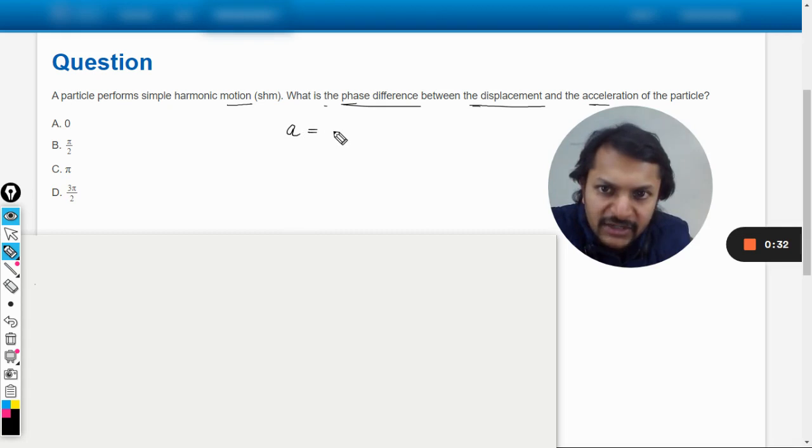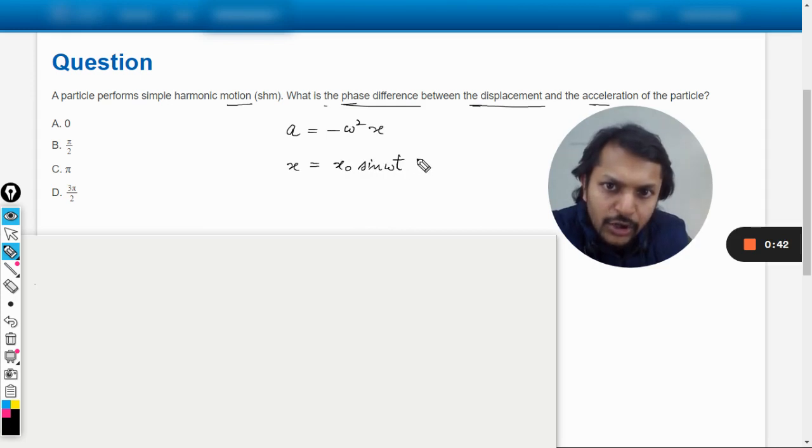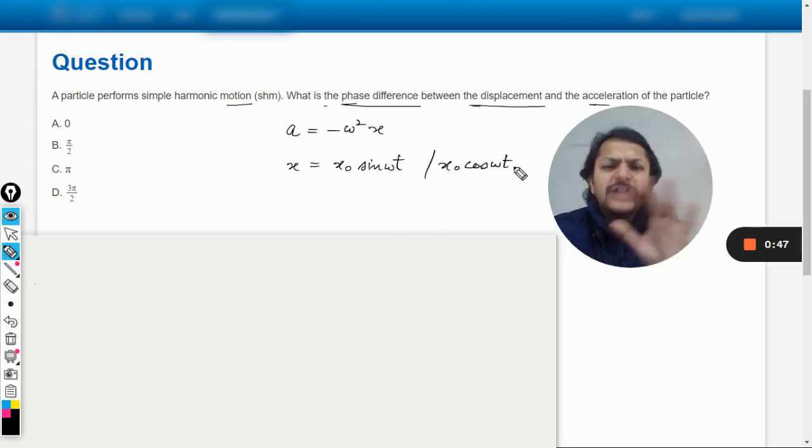Acceleration is given by this, and the displacement can be given by two different methods. It can be X naught sine omega t, or it can be given by X naught cos omega t also. So you can use any out of it, no problem at all.